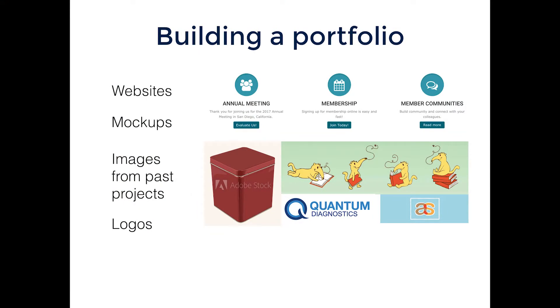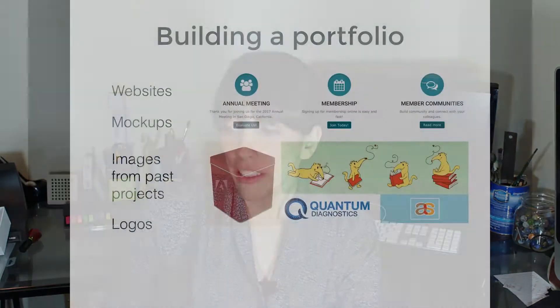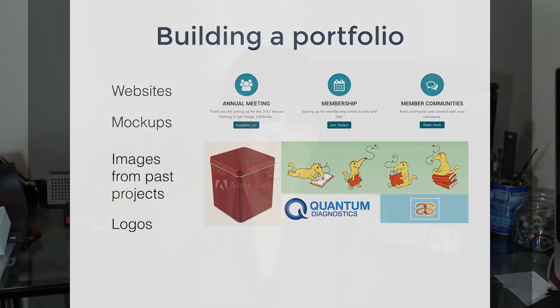Which brings us to logos. Logos are fine to sell. I wouldn't put any words on them — like this one was Quantum Diagnostics, but that's a fake company. I'm not actually selling a client's work or anything like that. I would just sell the Q by itself; you don't need to have text with it. In fact, it probably might not get past the review if you have text with it. And then the other one is just my old branding image, and I could sell this as an AS logo or something like that. So raid your old images for logos — you'll probably find a lot there that you can use.